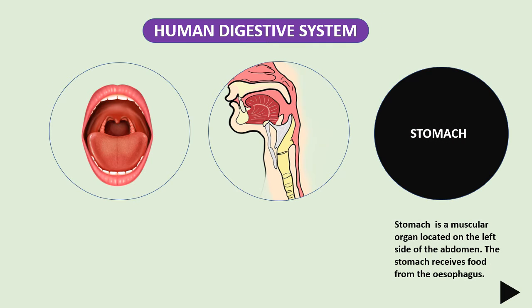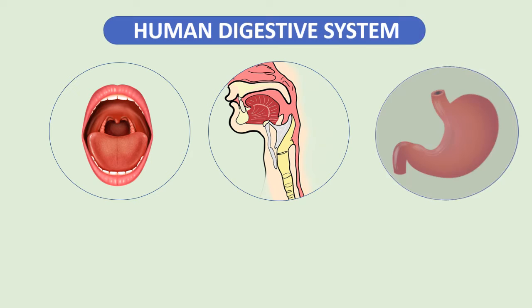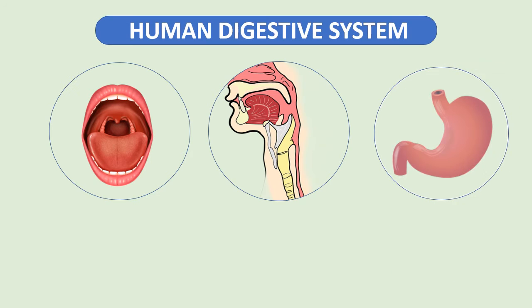The stomach is a muscular organ, or container. It is located on the left side of the abdomen. From the stomach, food is released into the small intestine.